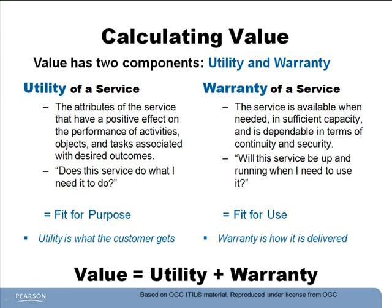Now that we know how to create value, we'll need to know how to calculate it. Value has two components: utility and warranty. The utility of a service means — does the service do what I need it to do? Do the service's attributes have a positive effect on the performance of activities, objects, and tasks associated with the outcomes I desire? Or easily stated, is this service fit for purpose? The warranty of a service ensures that the service is available and usable when we need it, that it's dependable, that there'll be enough of it when we need it, and that it'll be there in the event of a disaster and that it's secure. Is this service fit for use — meaning, is it usable? Will it be up and running when I need to use it?